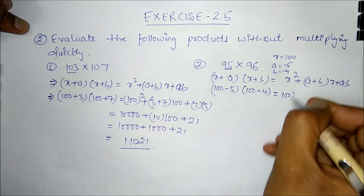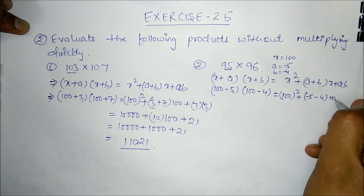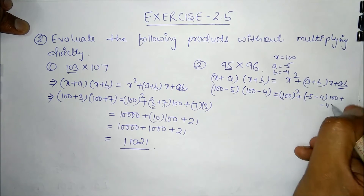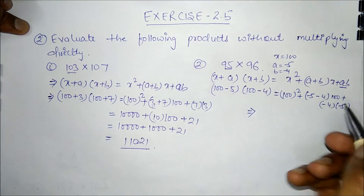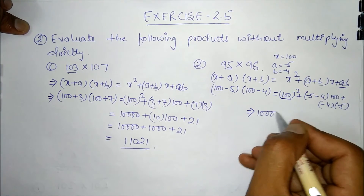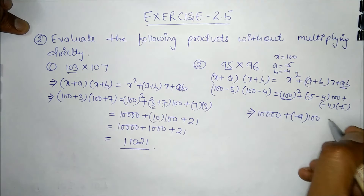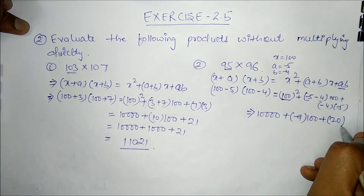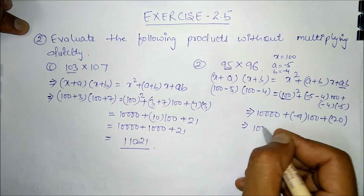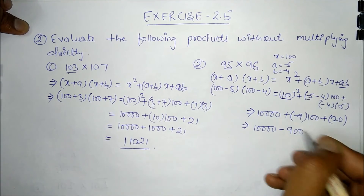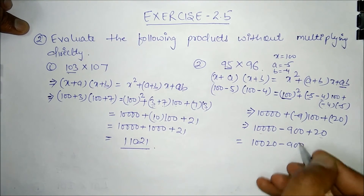So this becomes 100² + ((-5) + (-4)) × 100 + (-4) × (-5), which is 10000 + (-9) × 100 + 20, giving us 10000 - 900 + 20.